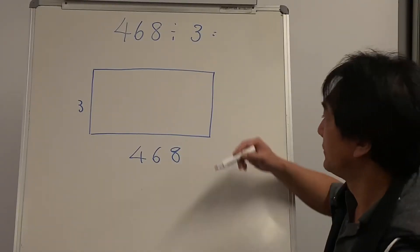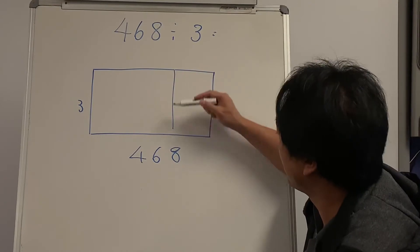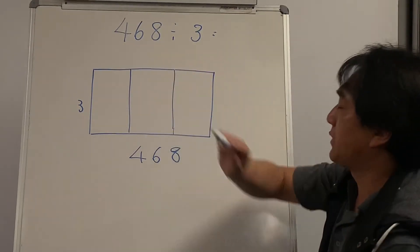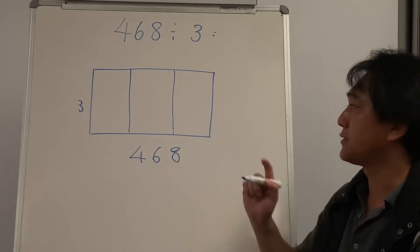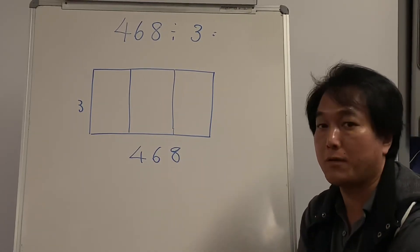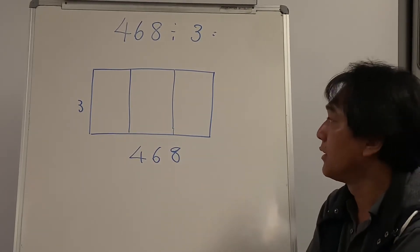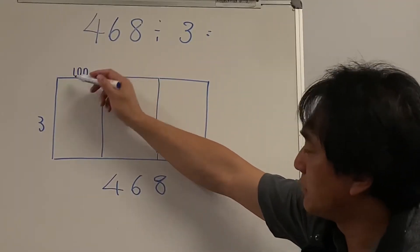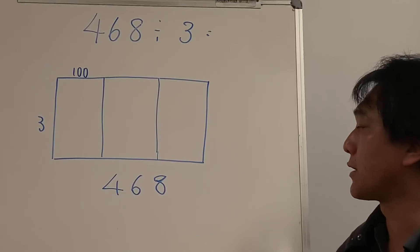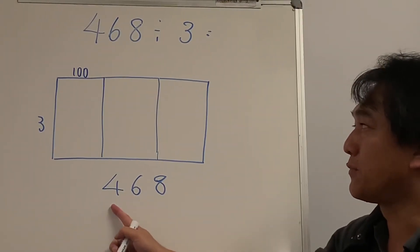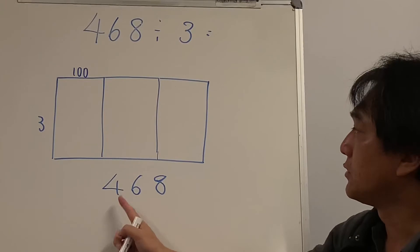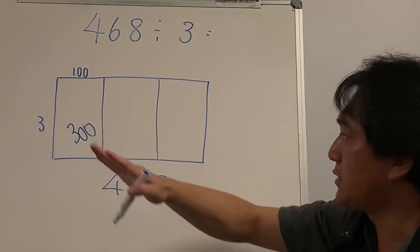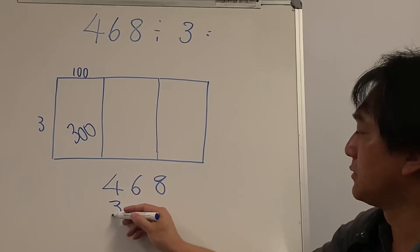Let's make three columns again — the answer may be three digits, possibly two. Let's put 100 in the hundreds column: 3 times 100 is 300. I can't put 200 there because that would be too many. So 3 times 100 is 300 — I just used 300 cupcakes.